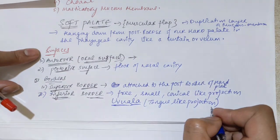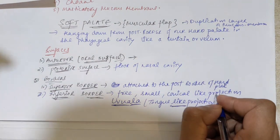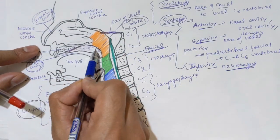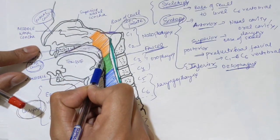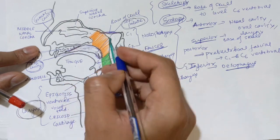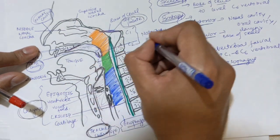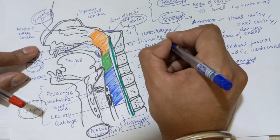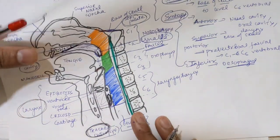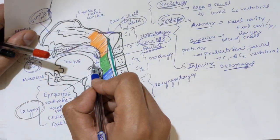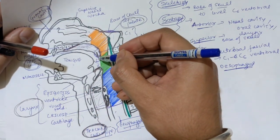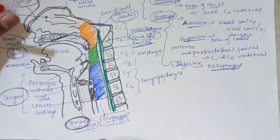The uvula is a small tongue-like, conical projection — it is the ending of the inferior border in the oropharynx. Below that is the fauces, or pharyngeal isthmus. The inferior border forms the anterior boundary for this pharyngeal isthmus, and the uvula projects down into it.